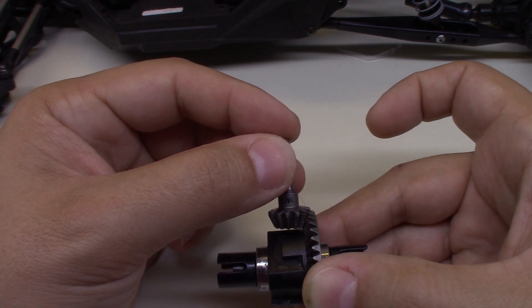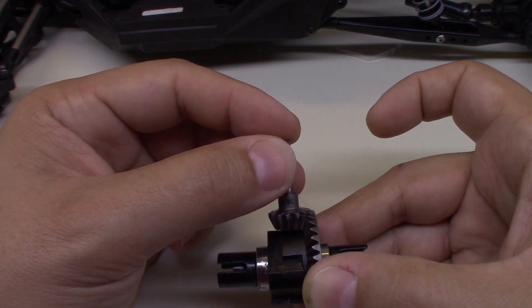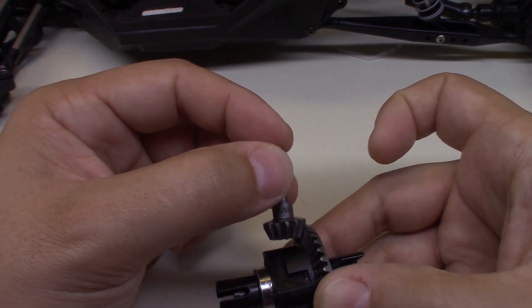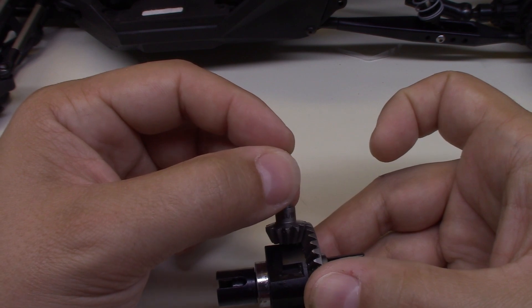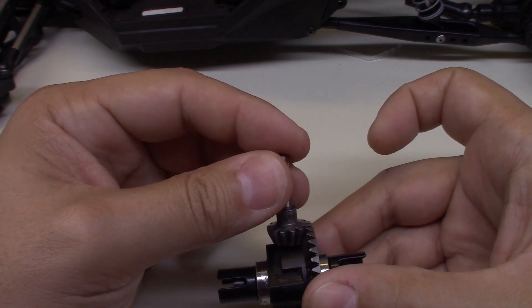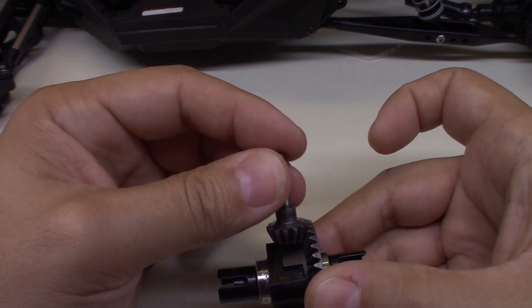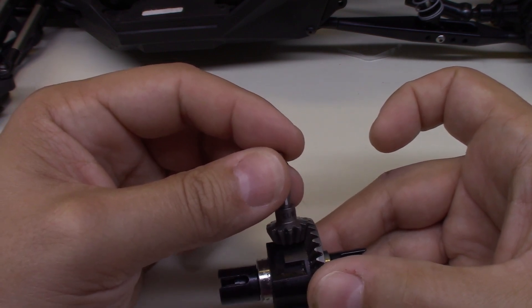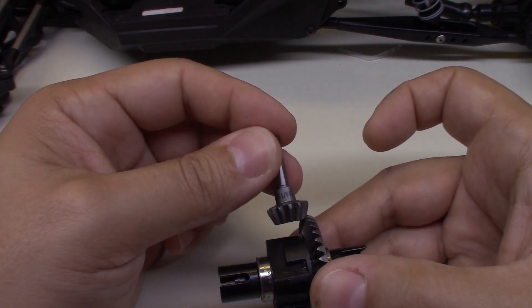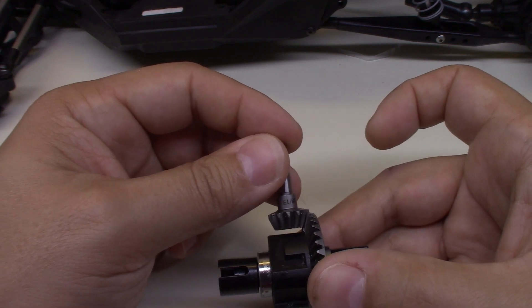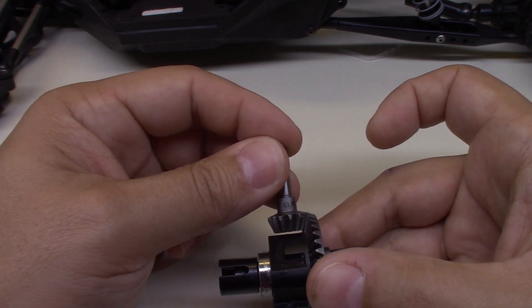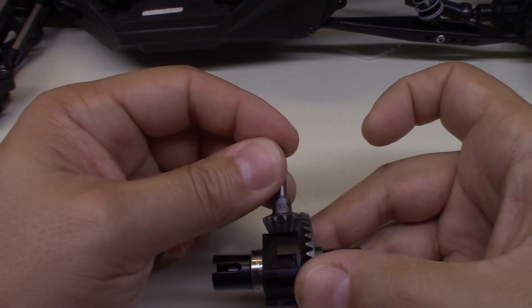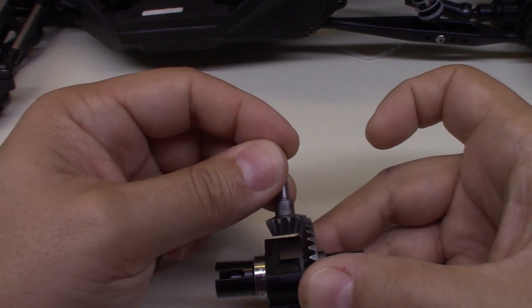Moving the pinion gear also makes the mesh deeper or more shallow. On an RC car, especially a basher, I wouldn't worry too much about that. On a real vehicle, that mesh and the way it's set up is very important for longevity and noise, but in an RC car, honestly, the main thing that you need to be worried about is the mesh between the gears in this kind of direction as they mesh together.